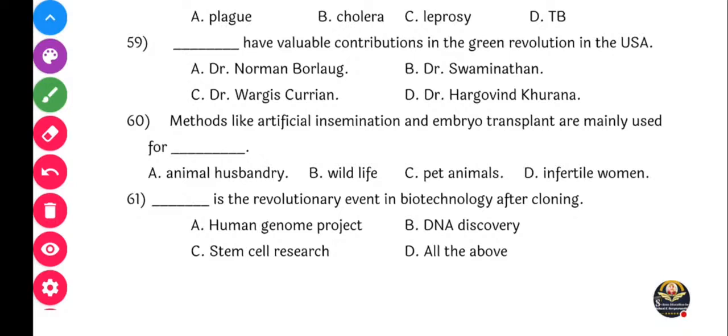Next question: Methods like artificial insemination and embryo transplant are mainly used for dash. Options: Animal husbandry, wildlife, pet animals, or infertile humans. Option A is the right answer - animal husbandry.